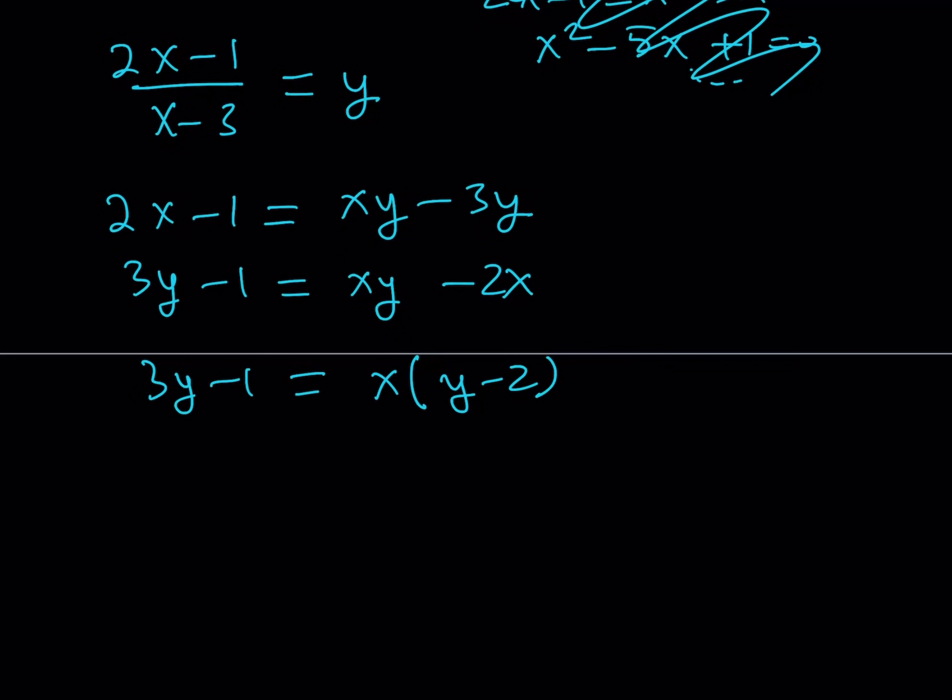And from here, I'm able to solve for x if we divide both sides by y minus 2. Of course, I know we have to talk about the domain and range, but as long as these values are appropriate, this function is going to be defined. So from here, let's isolate x. It's going to give me 3y minus 1 over y minus 2.